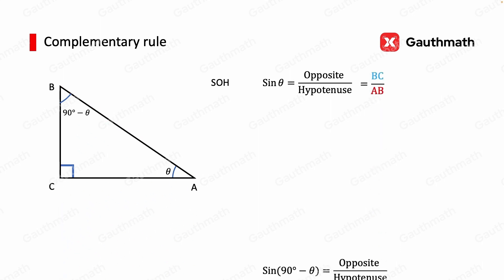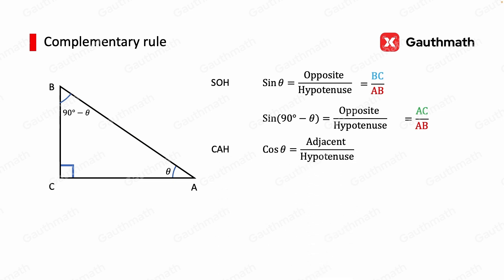By the same reasoning, sine of 90 degrees minus theta would be the opposite over hypotenuse, which would equal AC over AB. We know cosine theta is equal to the adjacent over hypotenuse. In our case, it would be AC over AB.